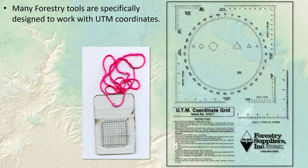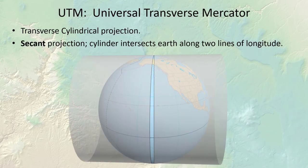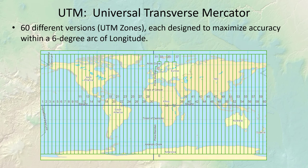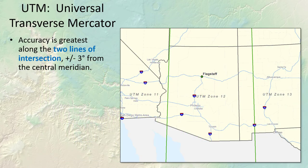UTM has a long history in ecological management and research. The USGS quads — those old 1:24,000 topo maps — often had UTM lines printed right on them for easy reference. Many forestry tools are designed to work directly with UTM coordinates. UTM is a transverse cylindrical projection — it's a secant projection, meaning it intersects the earth along two lines of longitude. There are 60 different versions of the UTM projection, called UTM zones, each designed for a six-degree longitudinal band. Flagstaff is in UTM zone 12. Within the UTM zone, projection distortion is minimized along the lines of intersection — at the edges of the zone.